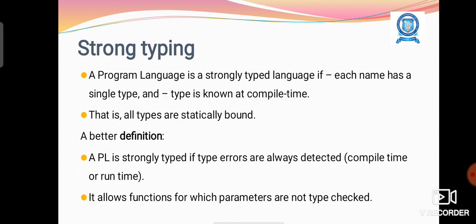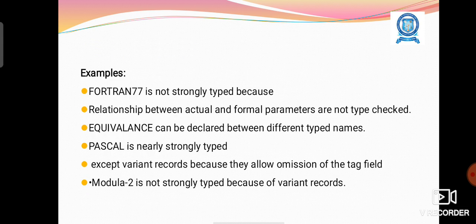A programming language is strongly typed if each name has a single type and the type is known at compilation time. A programming language is strongly typed if type errors are always detected. It allows functions for which parameters are not type checked.